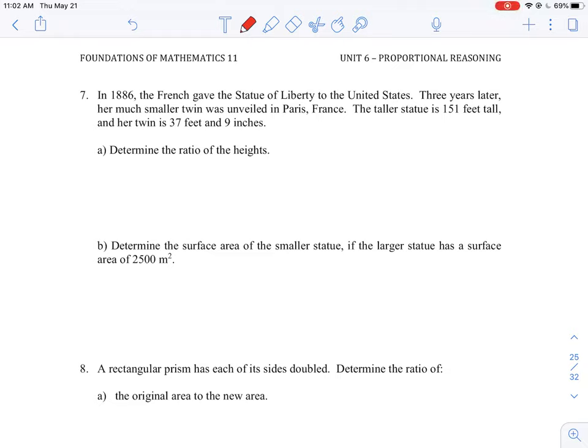Okay, so let's take a look at how to do question number seven, which is a volume question. What we have to do here is find the ratio of the two statues. The taller statue is 151 feet and the twin statue is 37 feet and nine inches.